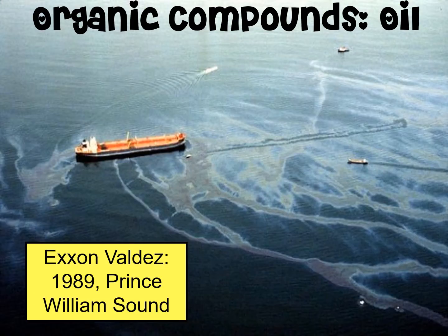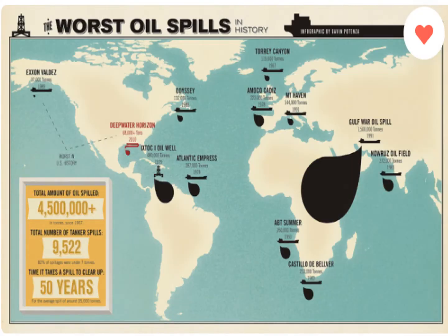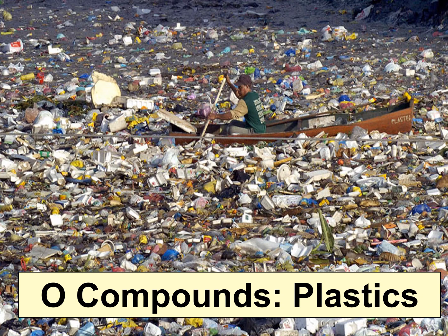Next we have organic compounds — materials that contain carbon. The most common one found in our waterways is oil. In 1989 we had a huge oil spill in Alaska where the Exxon Valdez tanker spilled its oil into Prince William Sound. There have been numerous oil spills around the world as shown in the diagram of worst spills in history. Another organic compound increasingly seen in our waterways is plastics — technically made from oil — which are also going into the waterways.